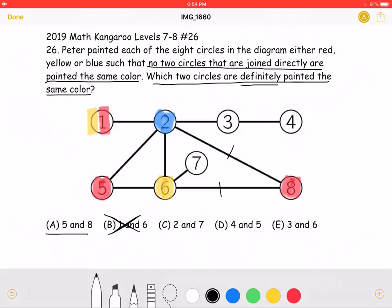For two and seven, the seven is connected to a yellow six, so the seven could be either blue or red. Again, the problem asks for which one is definitely painted the same. So answer choice C is wrong.